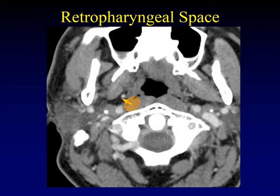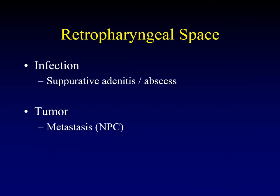Let's continue and discuss the retropharyngeal space. Masses that arise within the retropharyngeal space will displace the parapharyngeal fat predominantly laterally and a little bit anteriorly. Retropharyngeal space lesions include infections such as suppurative adenitis or retropharyngeal abscess, and tumors. There are lymph nodes in the retropharyngeal space, so metastatic disease to these lymph nodes will produce masses there.